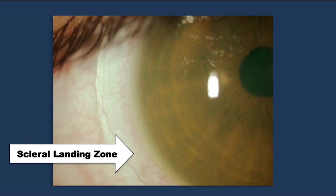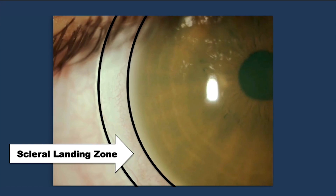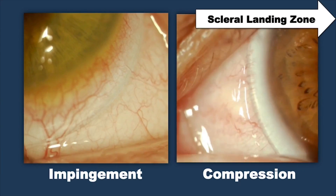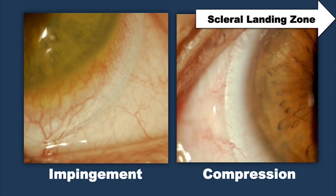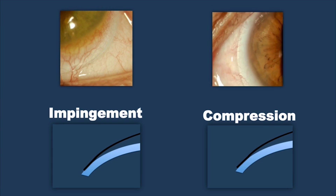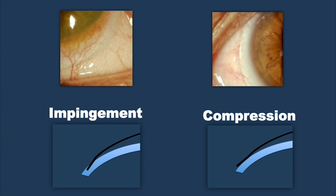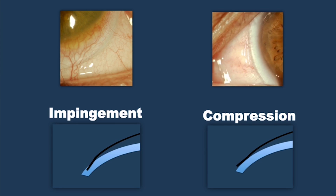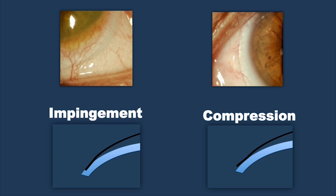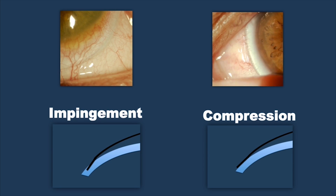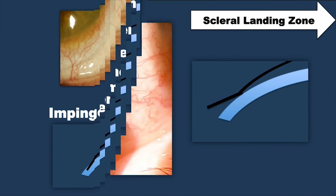The scleral landing zone is the region of the lens that rests upon the conjunctiva and underlying sclera. When not resting appropriately, three things can occur: scleral impingement, scleral compression, and edge lift. Impingement is when the very outer edge of the lens is digging into the conjunctival tissue, which may cause blanching of the blood vessels at the most distal portion of the lens. Compression is seen when there is excessive pressure on the conjunctiva and underlying sclera in the most proximal portion of the scleral landing zone, which can create blanching of the blood vessels under this region.